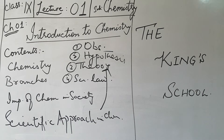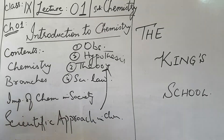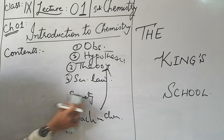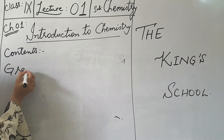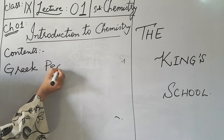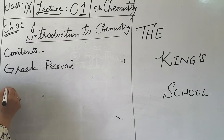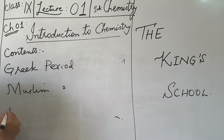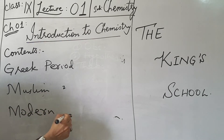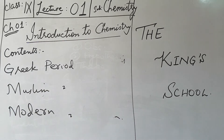After that we will study about the landmarks in the history of chemistry — like the Greek period, the Muslim period, and the modern period. These are our basic contents of this chapter.